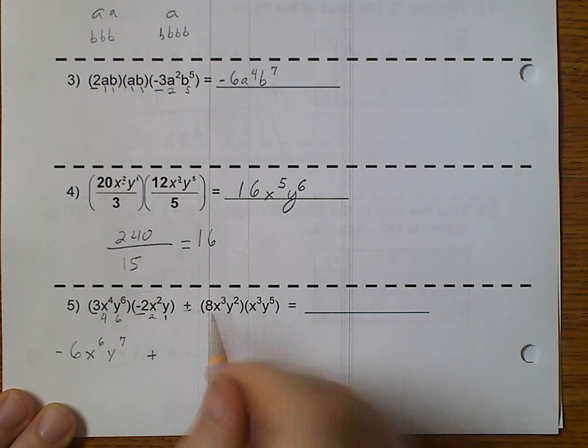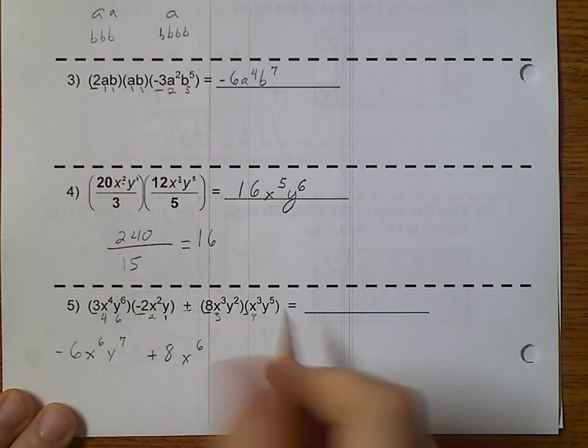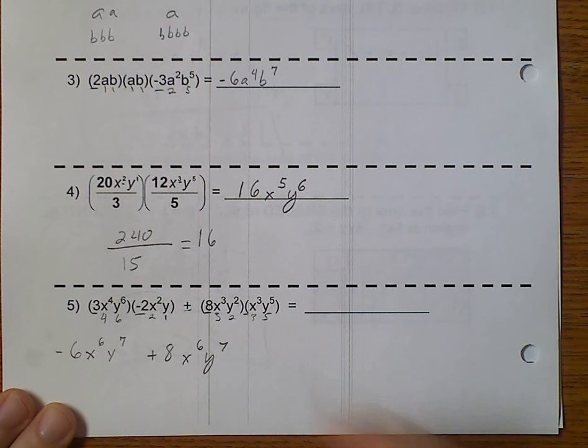Plus. Alright, well, 8 times 1 just gives me 8. x cubed and x cubed give me x to the 6th. And, y squared and y to the 5th give me y to the 7th. Now, I need to look to see, can I add these? Well, x to the 6th, y to the 7th matches x to the 6th, y to the 7th. And, because they match, I can go ahead and add them.